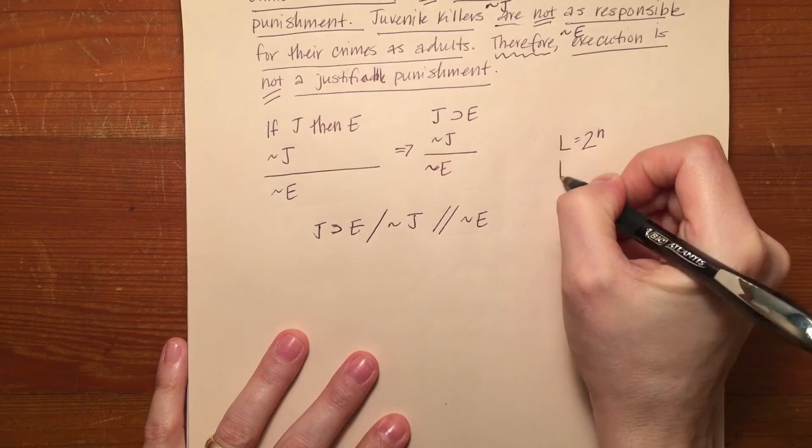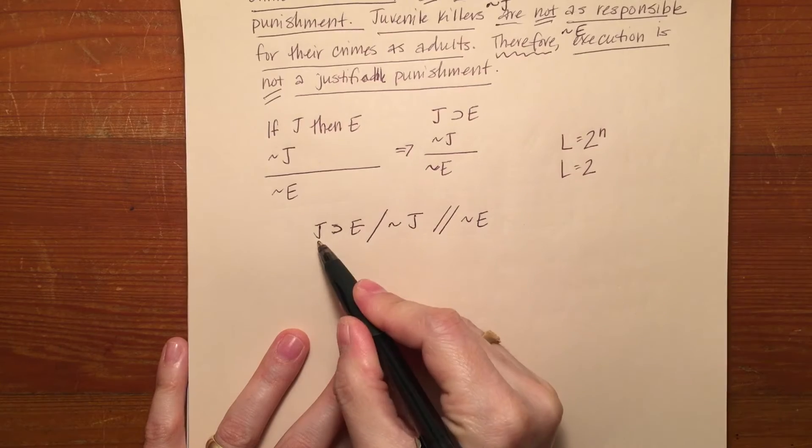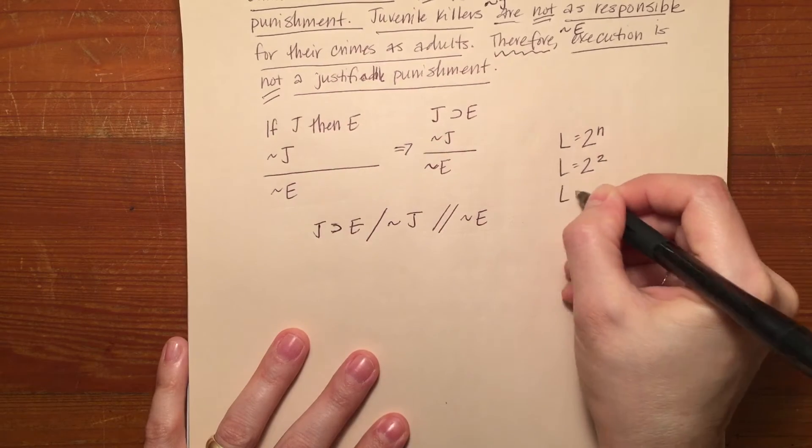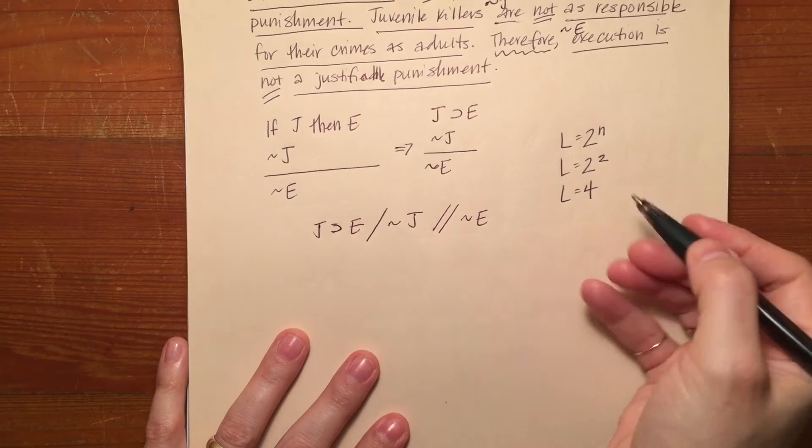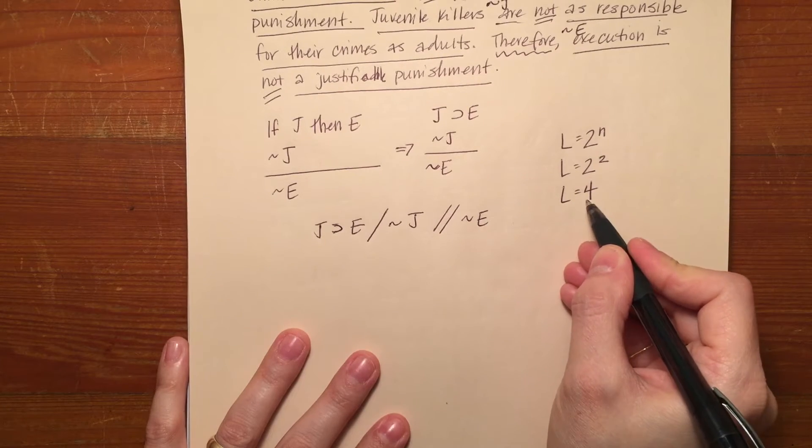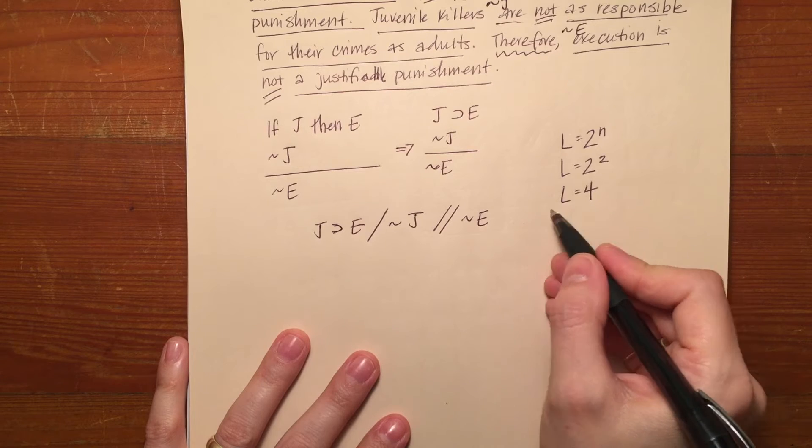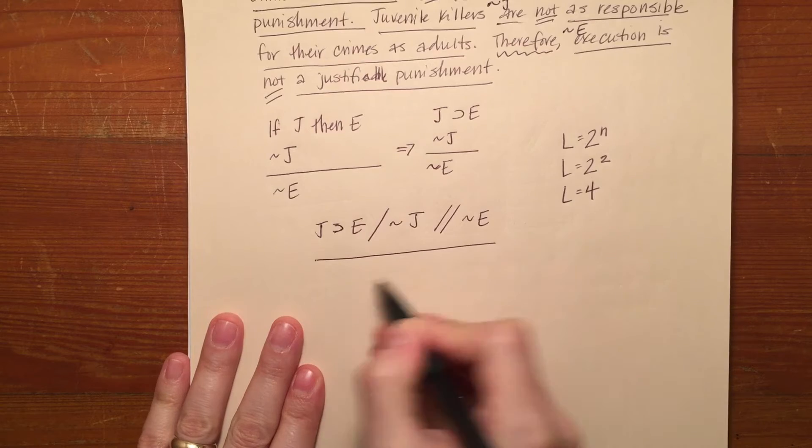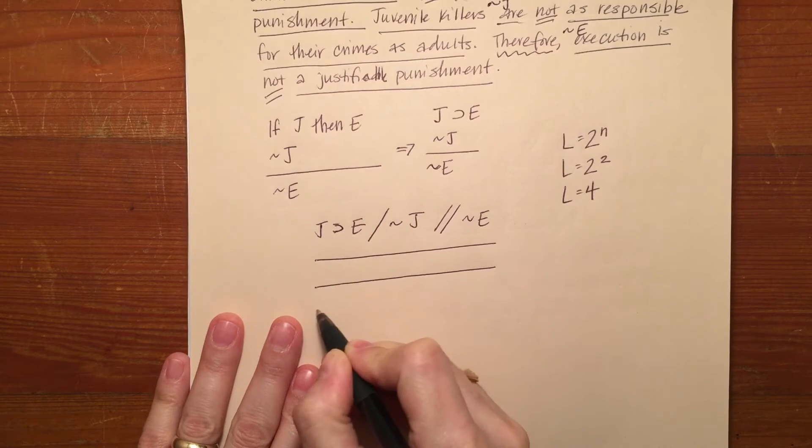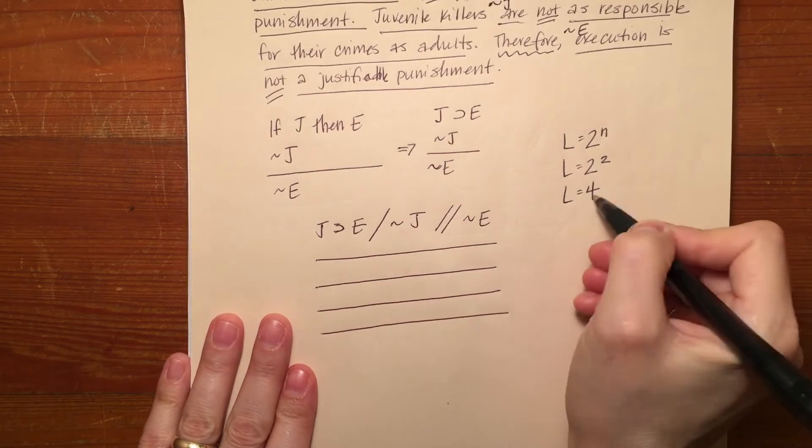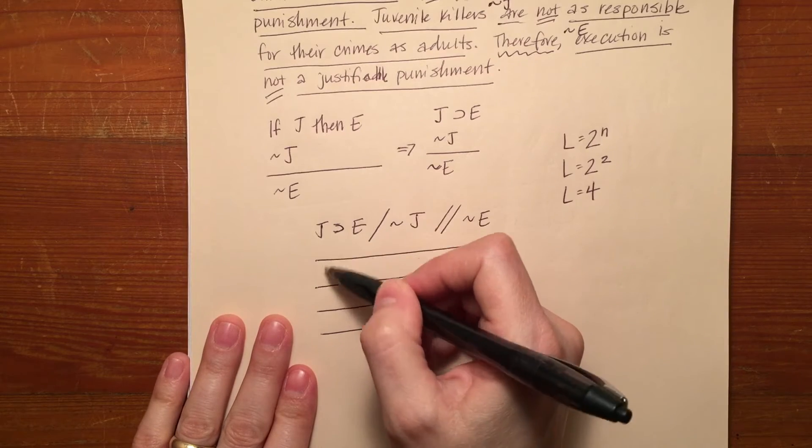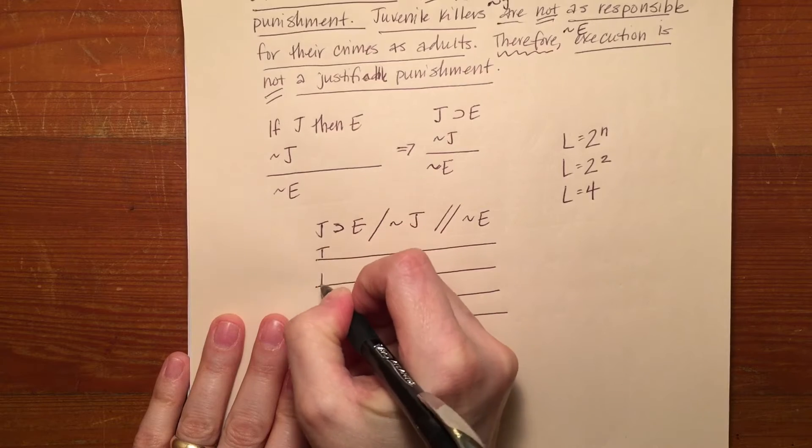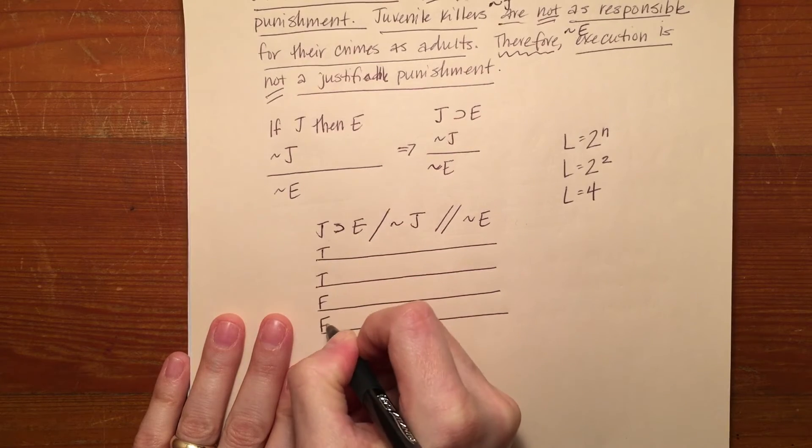L equals 2 to the N. L equals 2 to the JE. That's 2. So L equals 4 because there are two different letters. I divide that just as I did with my truth tables for propositions. I divide 4 in half. After first drawing four lines, I divide it in half to get the number of trues and falses under the first letter from the left. So I've got two trues and two falses under J.